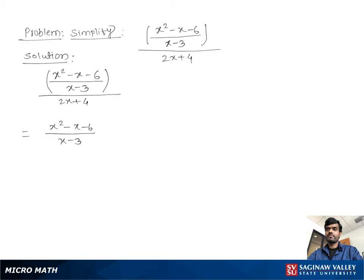Then we reciprocate the denominator part, so you can write times 1/(2x + 4). Now we multiply top to top and bottom to bottom, giving us (x² - x - 6)/(x - 3) times (2x + 4).